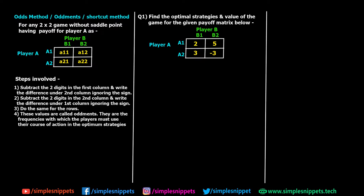In the previous video we saw the algebraic method, which was again used on a two-by-two game where we had a matrix without a saddle point. In that method we had certain algebraic formulas which you have to memorize and directly apply. But there's one more method — the odds method — which we are going to use in this video. I find this one much easier, and if there is no requirement to use a specific method, I would prefer this one because it's much simpler.